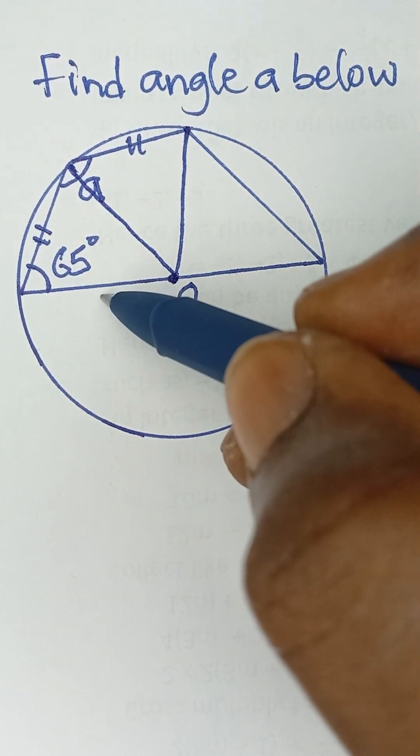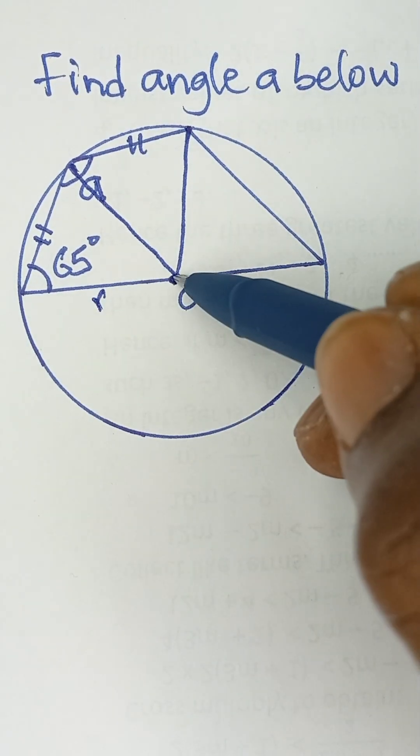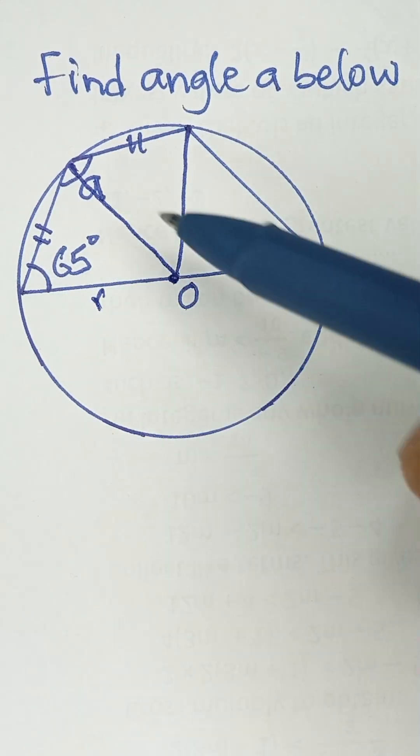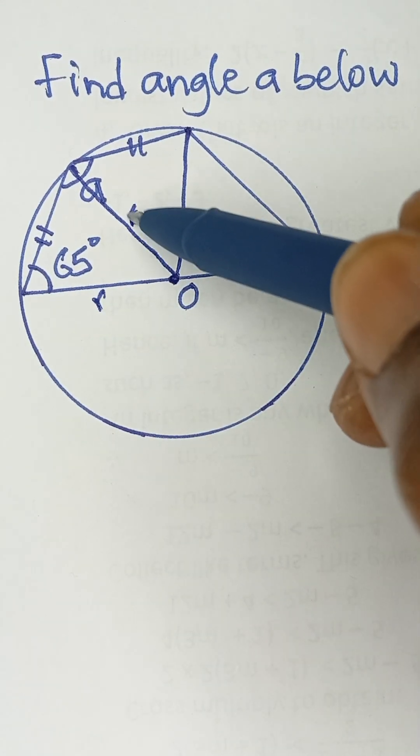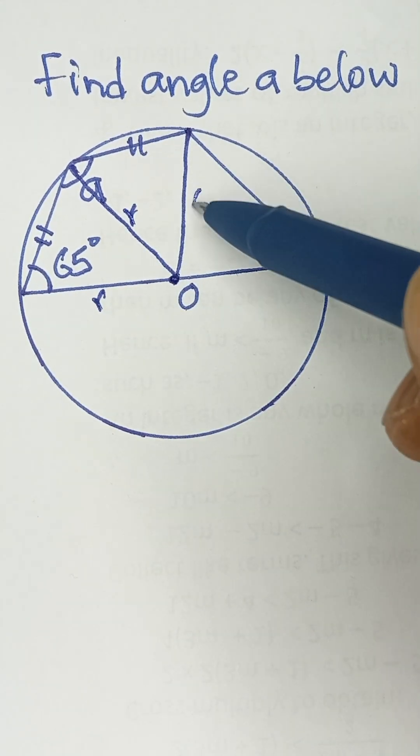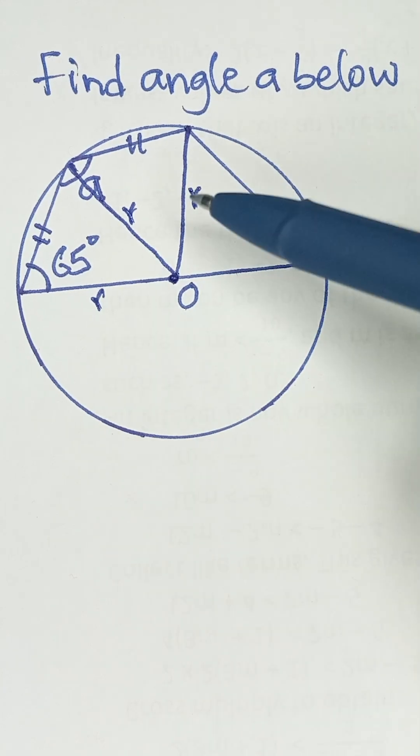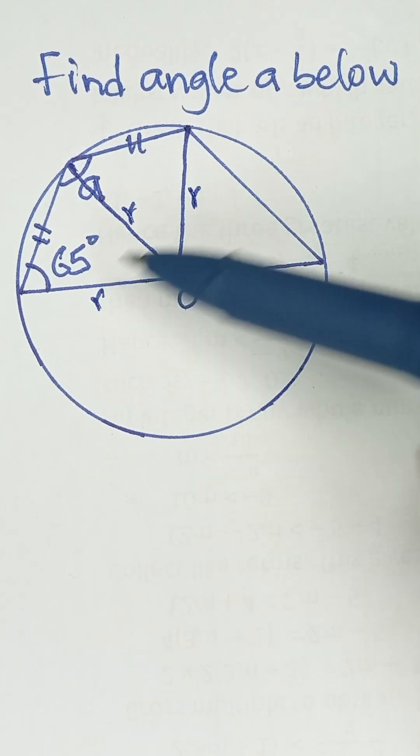Now, if you look at this, this is the radius of the circle from the center to the circumference. This is also radius of the circle and this is also radius of the circle. These three lines are radius of the circle.